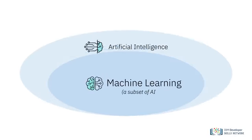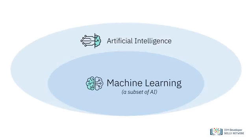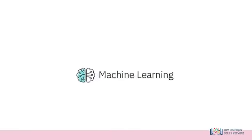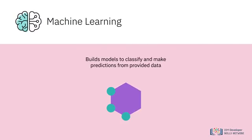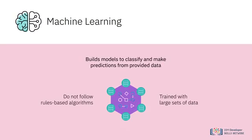Machine Learning, a subset of AI, uses computer algorithms to analyze data and make intelligent decisions based on what it has learned. Instead of following rules-based algorithms, machine learning builds models to classify and make predictions from data.